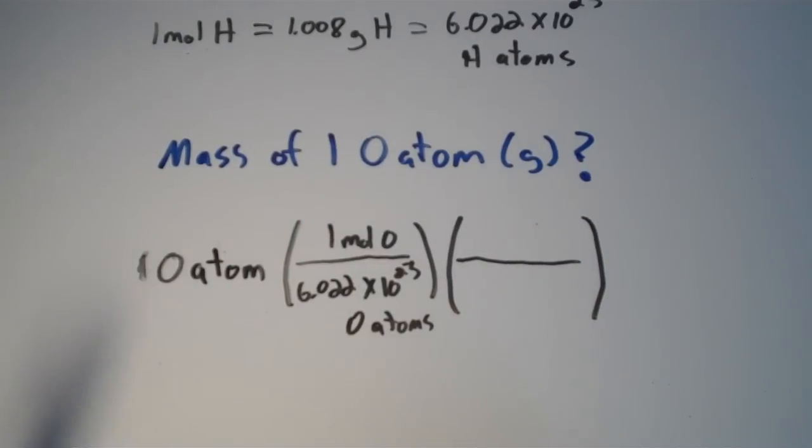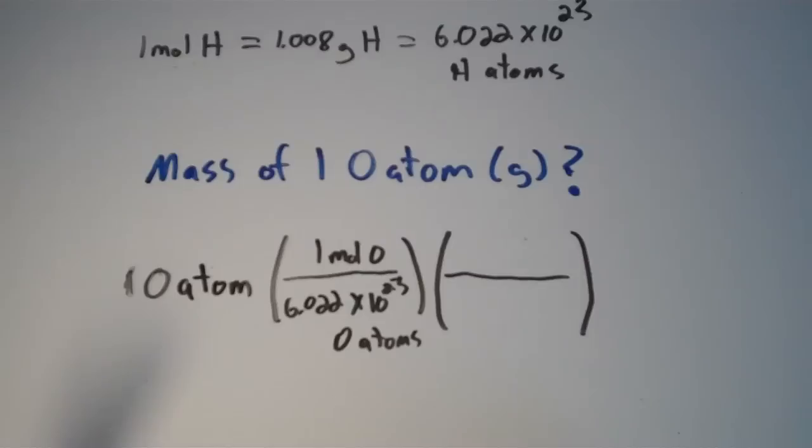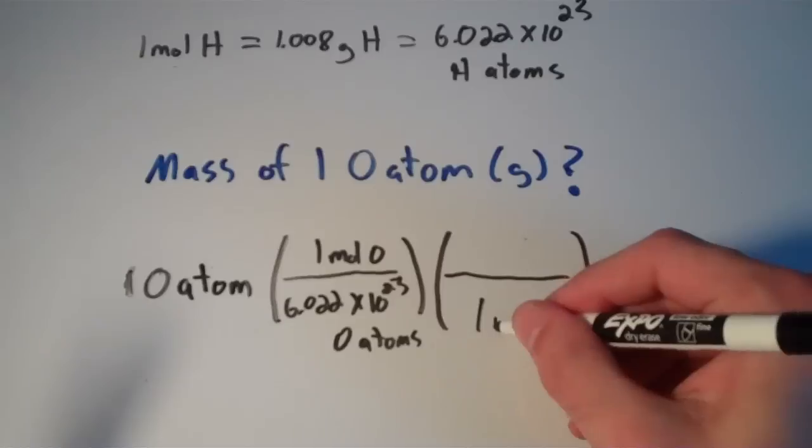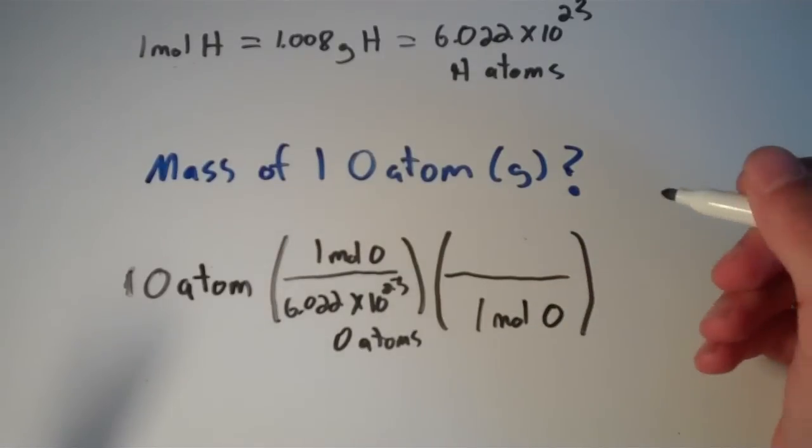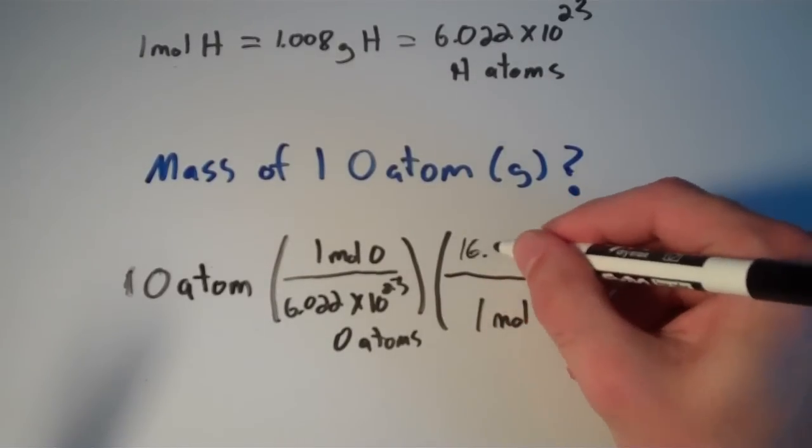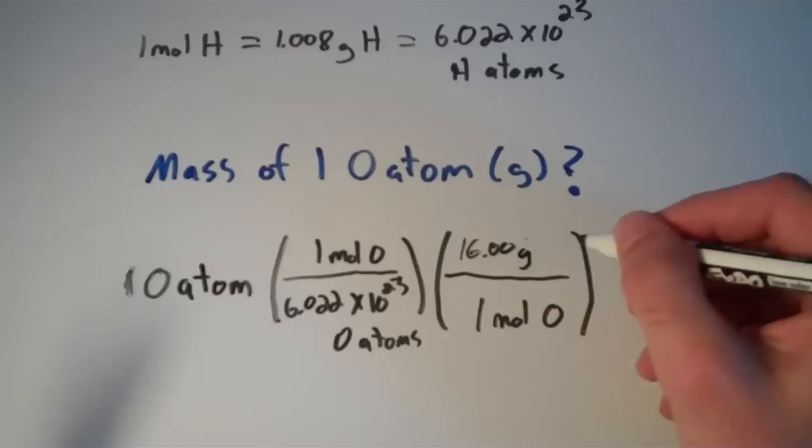And we also know from the periodic table that for every 1 mole of oxygen, we have 16.00 grams of oxygen.